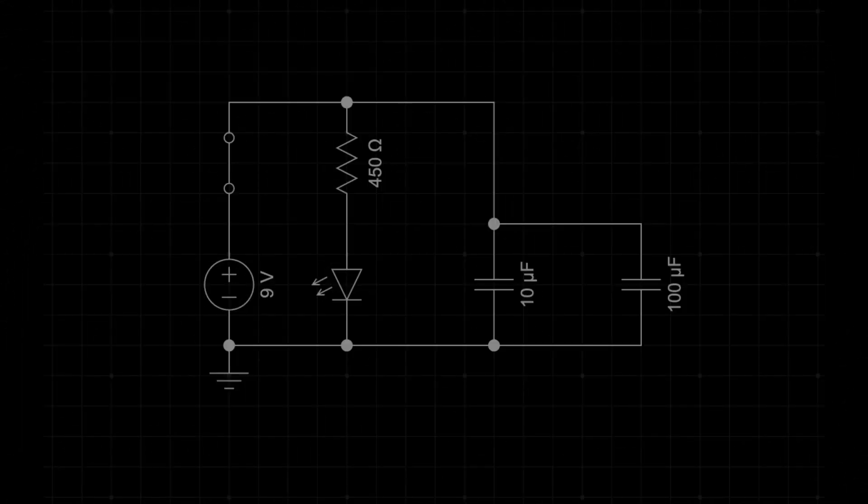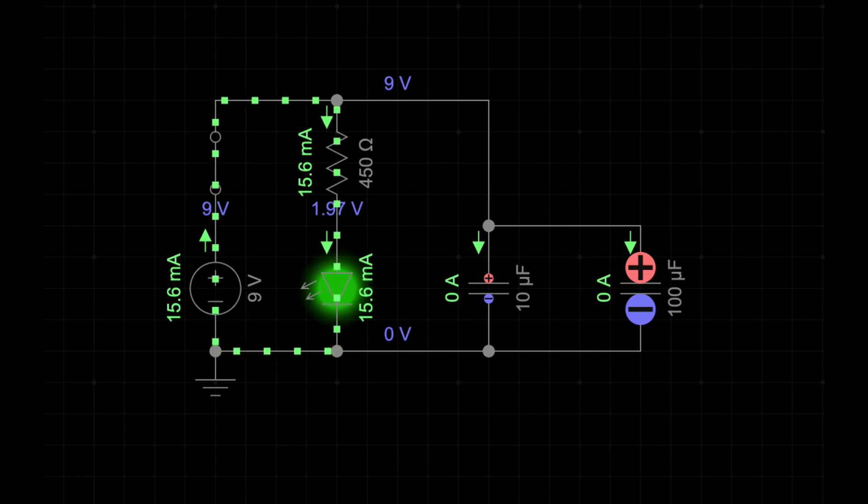To demonstrate the effects of the energy stored in a capacitor, I will attach an LED to the circuit. I will use a 450 ohm resistor in front of the LED to limit the current through the LED. Be sure to check my other video if you want to learn how I calculated the resistance. As shown, the LED lights up when the circuit is closed.